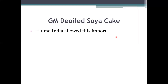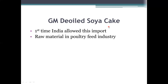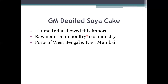For the first time, India has allowed the import of genetically modified de-oiled soya cake. De-oiled soya cake is used as a raw material in the poultry feed industry. The price of soya cake has been rising, prompting GEAC to allow the import of GM de-oiled soya cake. These imported materials are only allowed through two ports — West Bengal and Navi Mumbai.